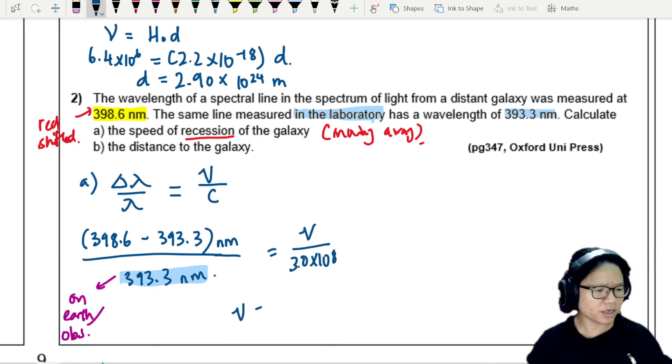I'm going to find the recession speed times 3.0 times 10 to the power of 8. From here, we can find 4.02. That's what I got. 4.0 times 10 to the power of 6 meters per second. You want to write more SF also can, but these are all just estimates.